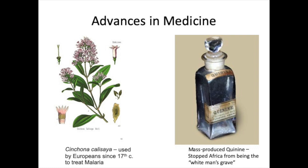What was new was that in the 19th century, quinine could now be mass produced for the first time. It did not cure malaria, a deadly tropical disease, but it did improve the survival chances of Europeans. No longer was Africa a white man's grave as it had always been.